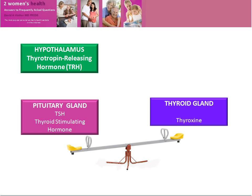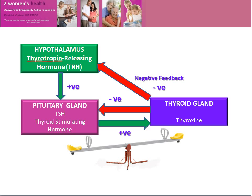The pituitary gland is in itself controlled by the hypothalamus, an area again at the base of the brain. As far as the thyroid is concerned, the hypothalamus produces thyrotropin releasing hormone, TRH. So the hypothalamus releases TRH, which stimulates the pituitary gland to release TSH, thyroid stimulating hormone. Thyroxin has a negative feedback effect on the hypothalamus and the pituitary, reducing thyrotropin releasing hormone and TSH outputs. This keeps the whole mechanism in balance.